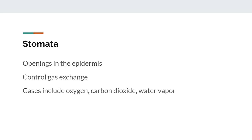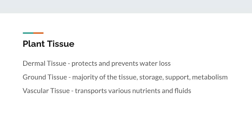Like humans, plants have different types of tissue. There are three main types of tissue that can be found in a plant: dermal tissue, ground tissue, and vascular tissue. The dermal tissue functions to protect the plant and prevent the loss of water. The ground tissue is the main bulk of a plant and its functions are to provide storage and support, as well as to convert food into energy — in other words, the plant's metabolism. And lastly, vascular tissue serves to transport various nutrients and fluids around the plant.